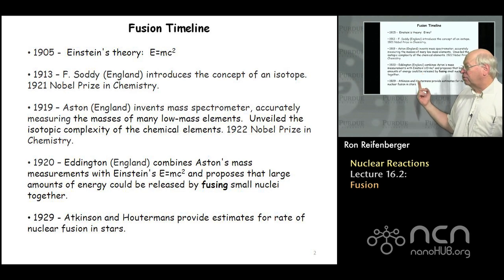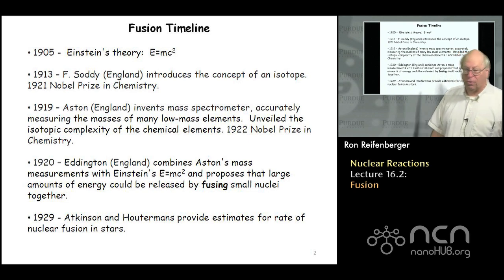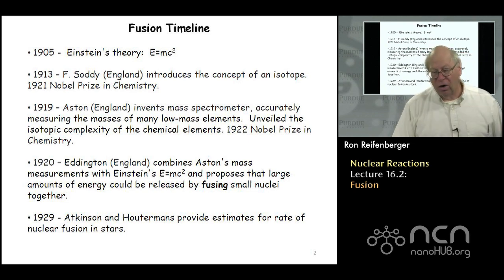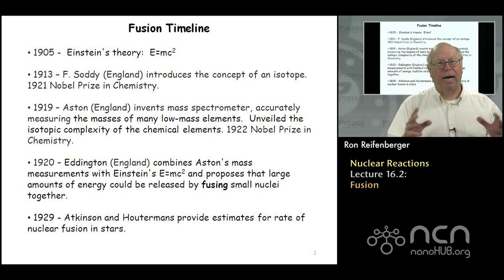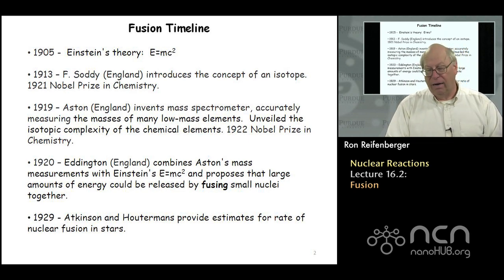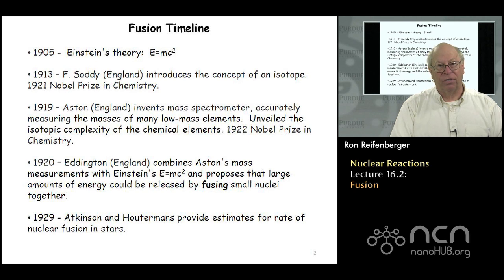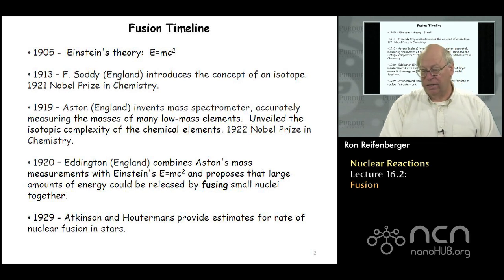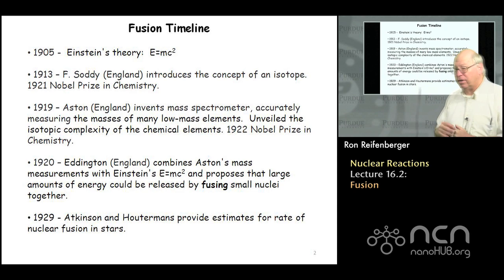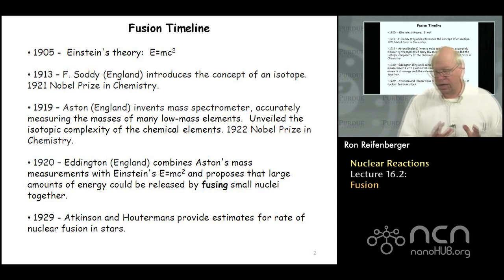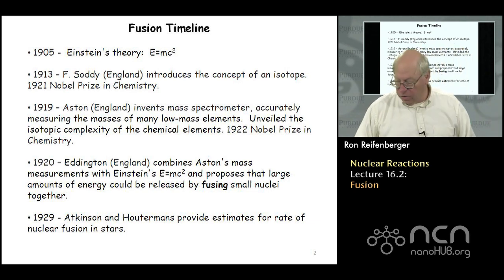It took another nine years or so before two scientists provided estimates for the rate of nuclear fusion in stars. It slowly dawned on people that the tremendous amount of energy released by our Sun and other stars might be explained by fusion nuclear reactions. In 1929, Atkinson and Hutterman's provided those early theoretical estimates for the rate of nuclear fusion in stars.